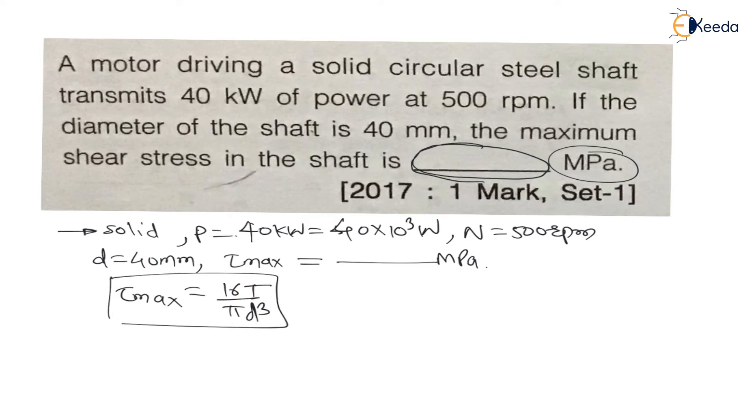Now we know the power equation, that is power is equal to 2πNT upon 60. This is the power equation. Therefore from this equation we can say torque is equal to 60 into P divided by 2πN.